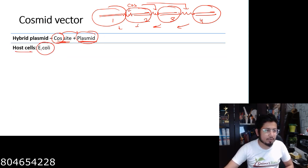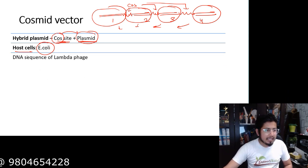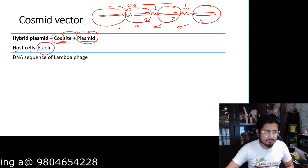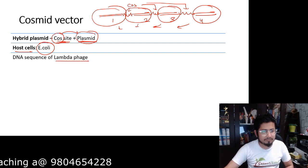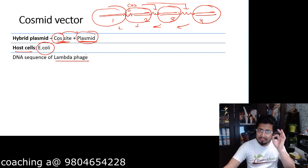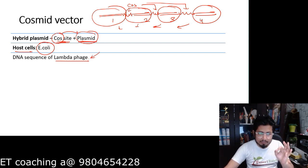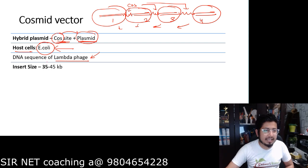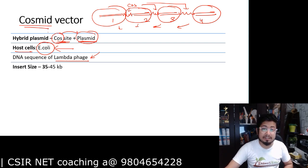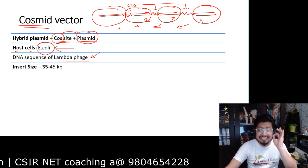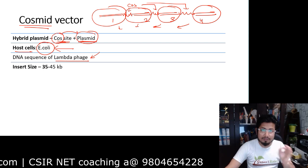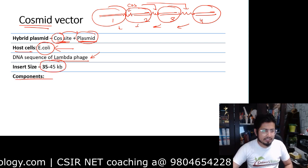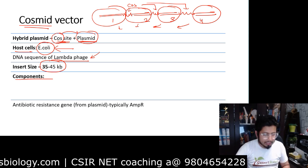The host cell we use for Cosmid is E. coli bacteria. The DNA sequences used in the Cosmid vector are taken from lambda phage. The insert size capability for Cosmid remains the same as for lambda phage, that is 35 to 45 kilobases.